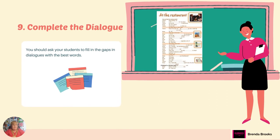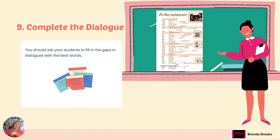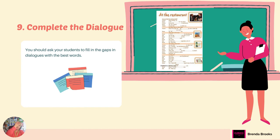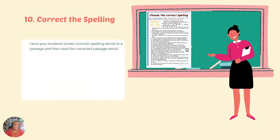Number nine: completing a dialogue. Students will look at an image and see the beginning of a dialogue, then try to complete the dialogue. This way you will see how well their understanding is of a conversation as well.